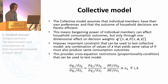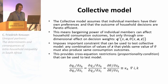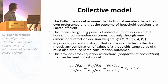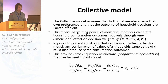The collective model of household behavior assumes that individual members have their own preferences and that the outcome of household decisions is Pareto efficient. This means that the bargaining power of household members can affect household consumption outcomes, but only through a one-dimensional effect on decision weights — the Pareto weight. For all distribution factors that yield the same Pareto weight, we should expect the same effect on household consumption. This provides a cross-equation restriction known as the proportionality condition, which can be used to test the model. This restriction has been known to be necessary and sufficient to identify the collective model at least since Browning and Chiappori's 1993 paper.